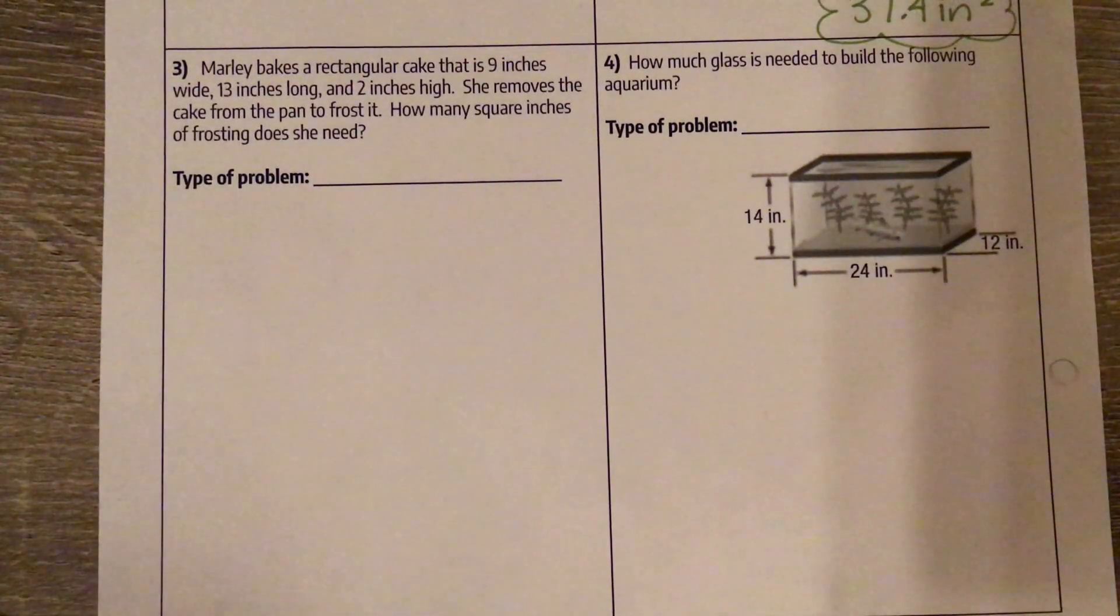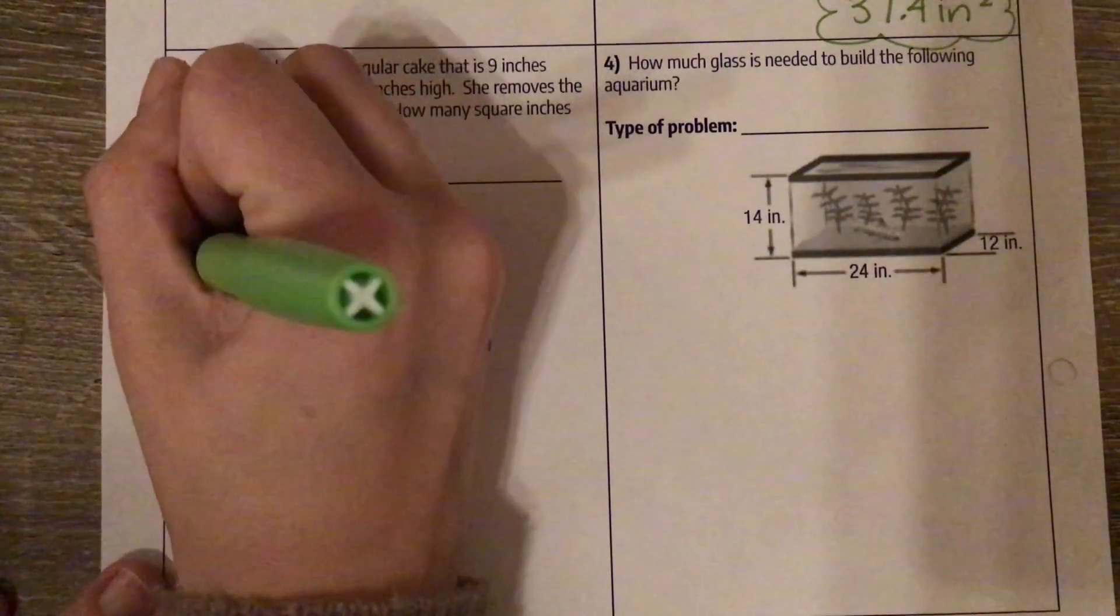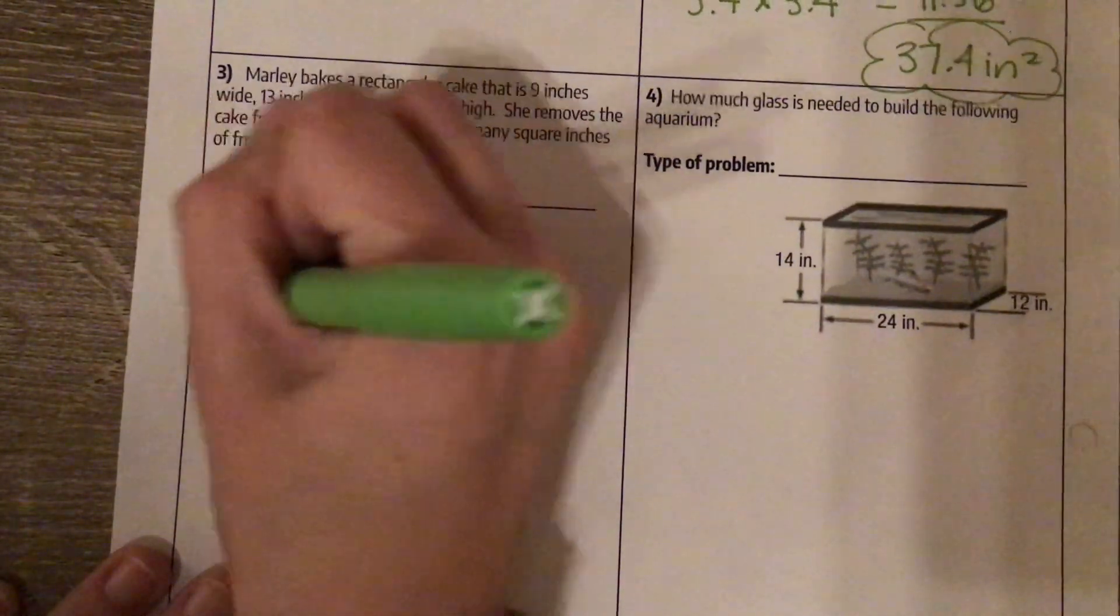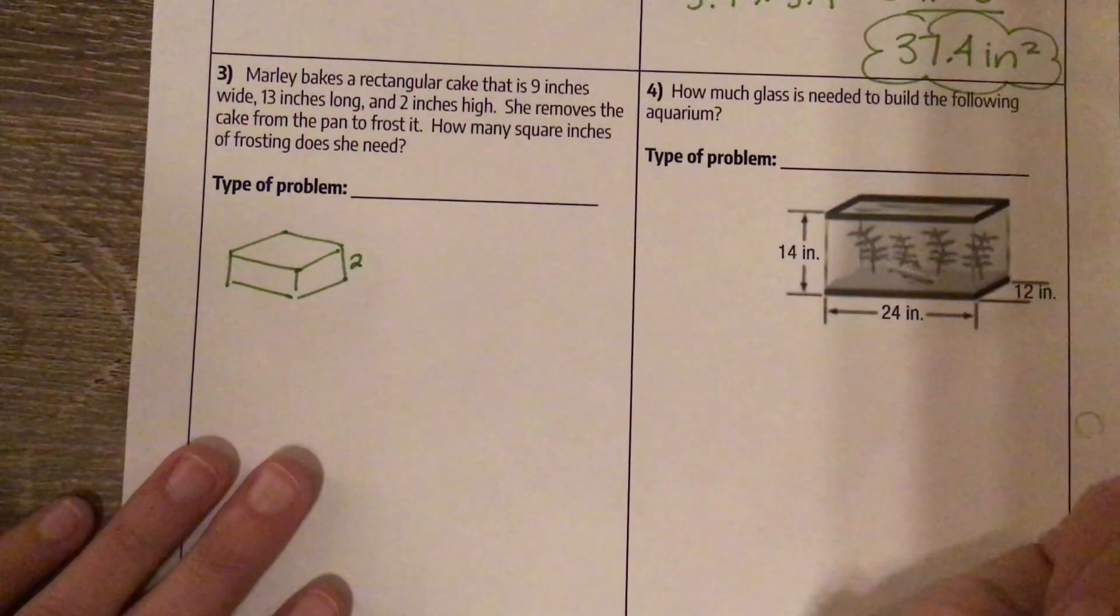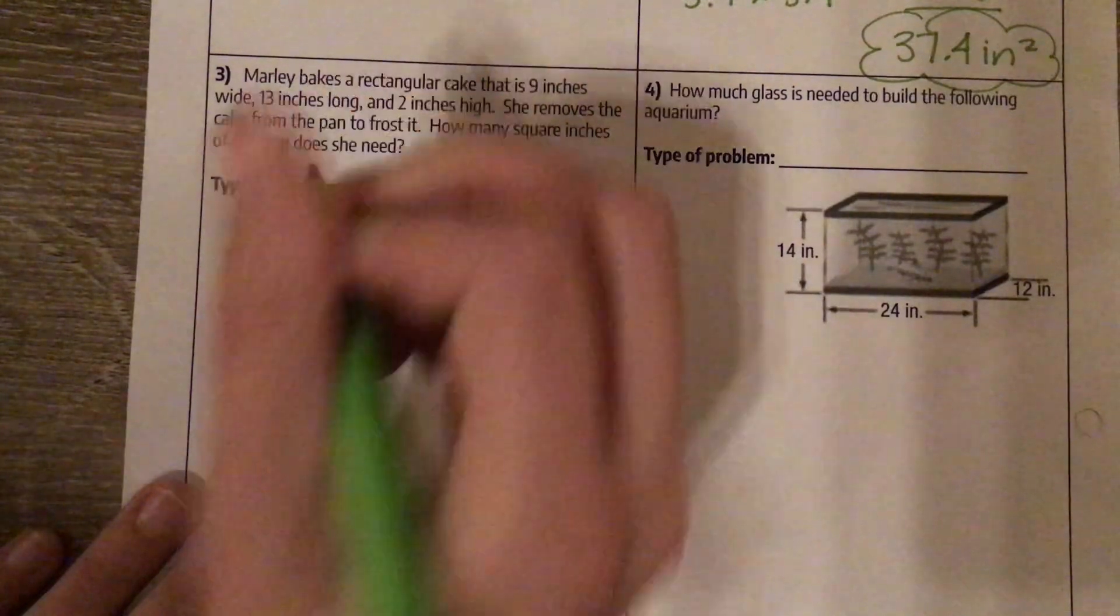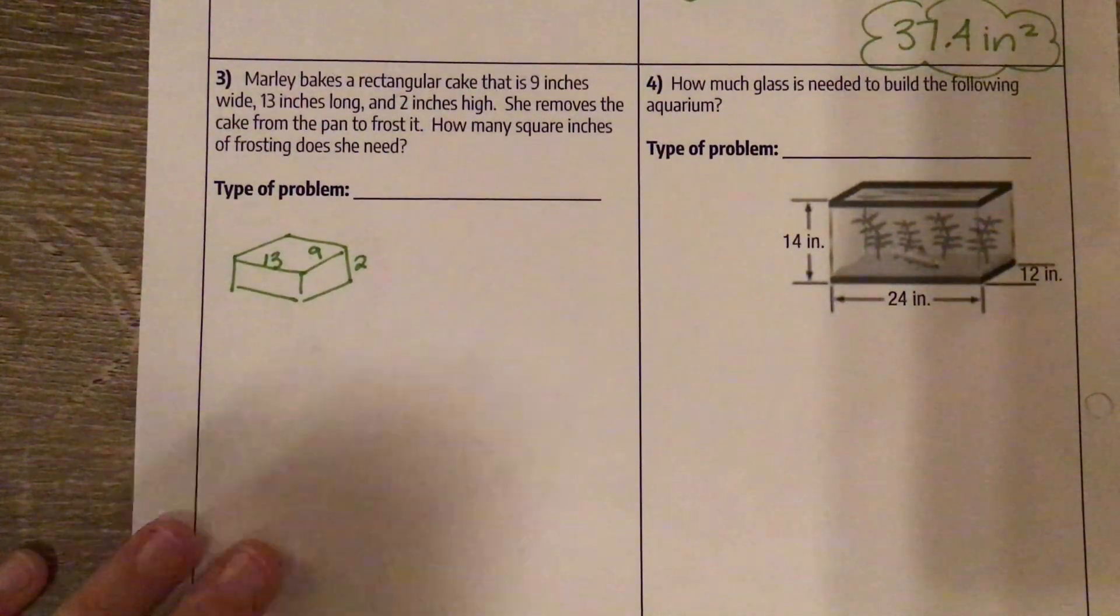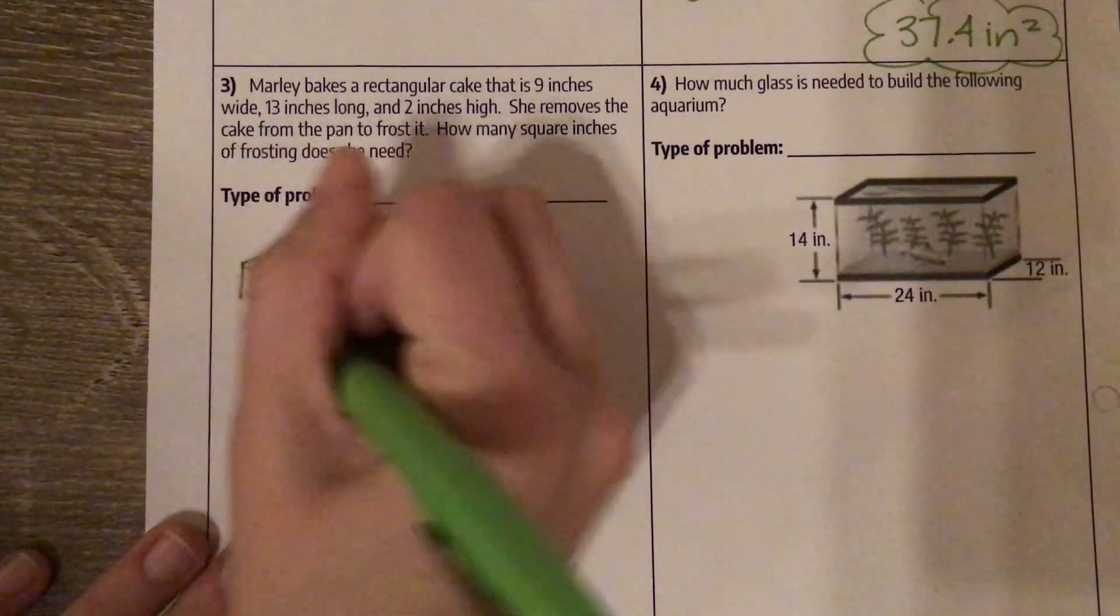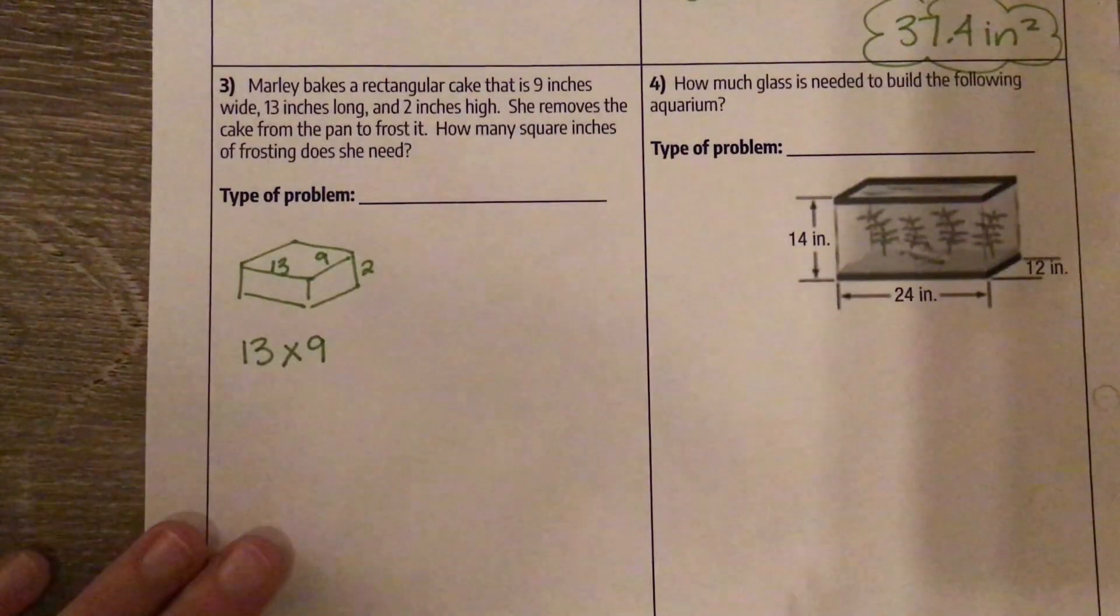You are just frosting the sides and the top. So I'm going to just draw a fake shape here. So we can think about these measures. We know it's 2 inches high, it is 13 inches long and 9 inches wide. We know there's three different dimensions here. So we've got our 13 by 9 is the top and the bottom.